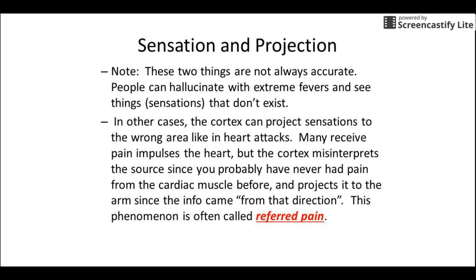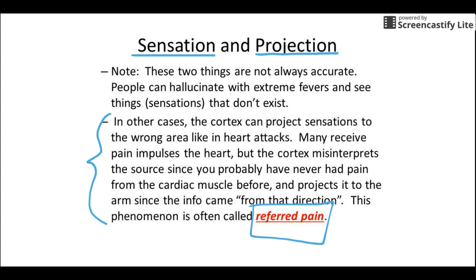The next topic is referred pain. We mentioned sensation and projection all happen in the brain, and sometimes the brain can mess things up. The most classic example is a heart attack — people often feel the pain in the left arm, but nothing is wrong with the left arm. The heart sends action potentials up to the brain, but the brain gets confused, misinterprets the sensation, and projects the signal to where it thinks it's coming from — the shoulder. It ends up being a mistake; the pain is actually coming from the heart.